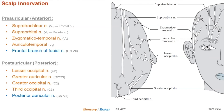In terms of motor innervation, we of course have the frontal branch of the facial nerve, which runs in that fat pad between the deep and superficial layers of the temporalis fascia.